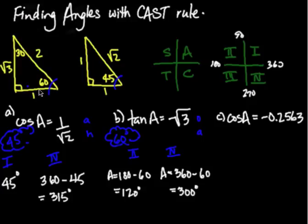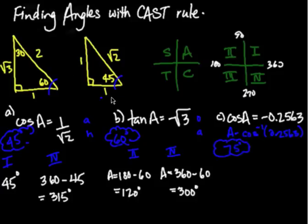Now, the last one doesn't have anything to do with the two special triangles. It's the cosine of this just random decimal number. So to figure out the related angle, I just take the cos inverse in my calculator of that number. And I find that the related angle is 75 degrees.